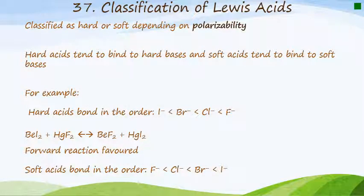Now, how do we classify Lewis acids? Lewis acids and bases are classified as either being hard or soft, and that depends on their polarizability. So hard acids are going to tend to bind to hard bases, and soft acids will tend to bind to soft bases. So for example, the hard acids bond in a specific order, so this is the increasing order for bonding with hard acids, and soft acids will bond in this order here.